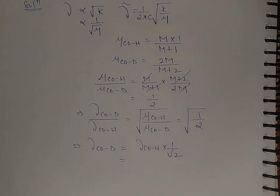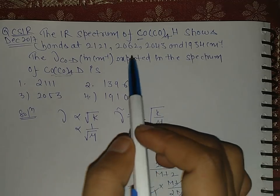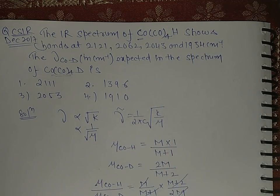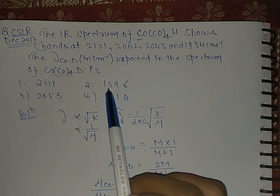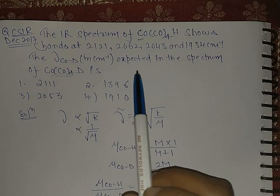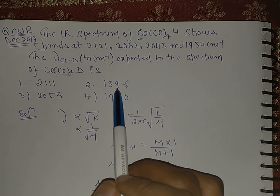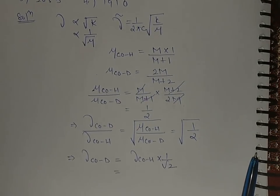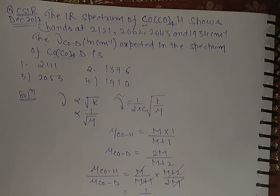So in the question, these four values are given. Take any value. Let's take 1934. If you take this value also, then value will come around 1400 to 1500, then also it is close to this value 1396, this is 1400.